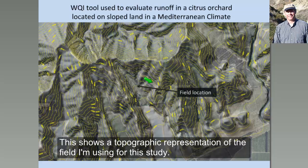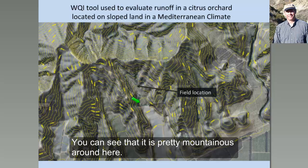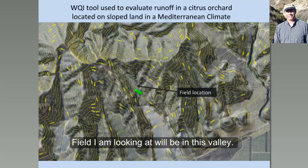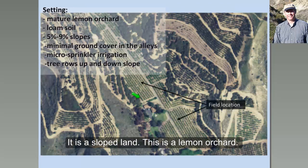This slide shows a topographic representation of the field I'm using for this study. You can see it's pretty mountainous around here, but the field I'm looking at is right here in this little valley. It's still sloped land. This is a lemon orchard here.